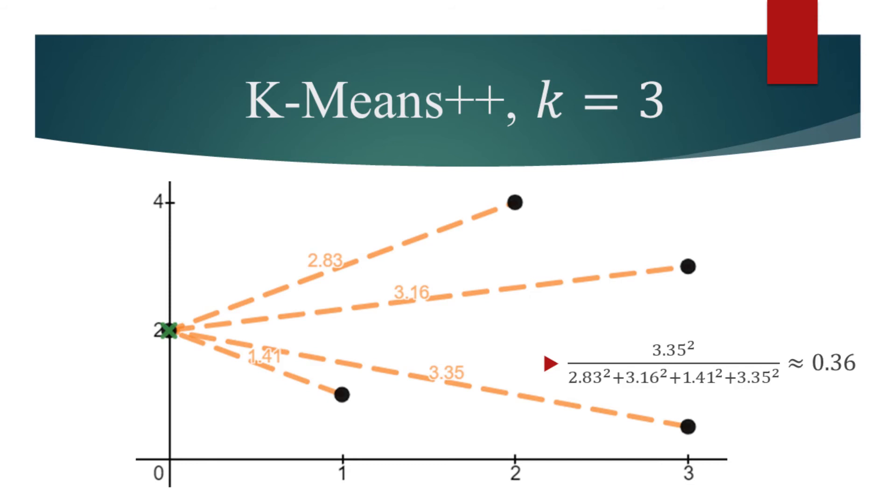Hence, the probability will be proportional to the Euclidean distance squared. Let us choose the bottom right as our second centroid.